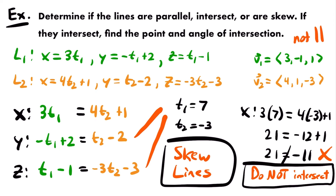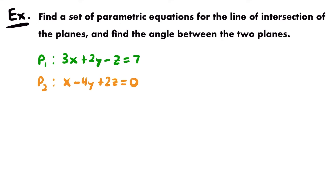For our last example, we want to find a set of parametric equations for the line of intersection of two planes and find the angle between the two planes. When two planes intersect, their intersection is a line. To find that line, we need a direction vector and a point on the line. The direction vector is found by taking the cross product of the normal vectors from each plane.